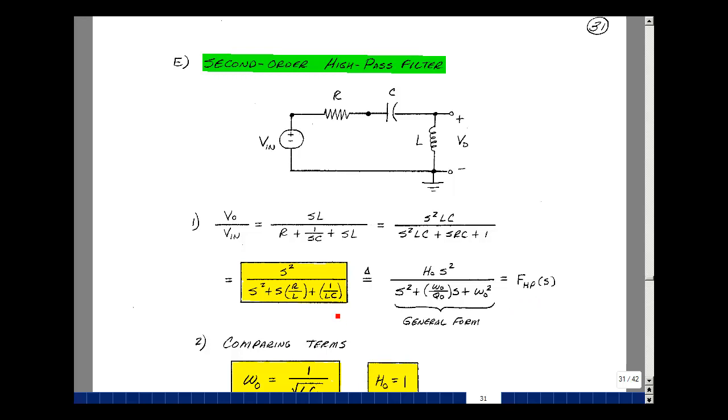Solve for the three constants of this filter, H naught, omega naught, and Q naught. I can do that by looking at the terms that are here and comparing them back to my transfer function. Again, the easiest one is omega naught because it's sitting here by itself. That's going to be equal to the square root of 1 over LC.